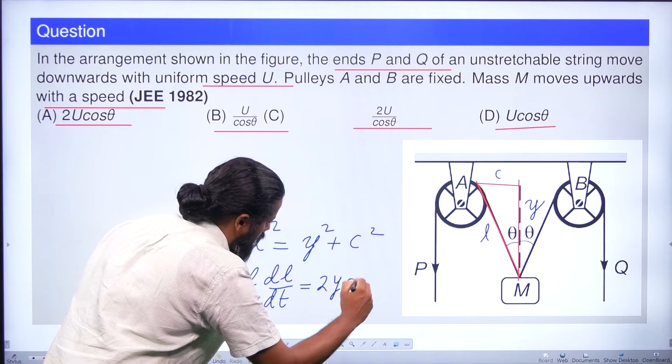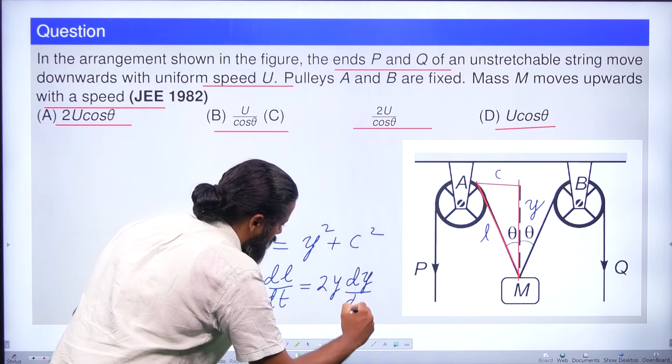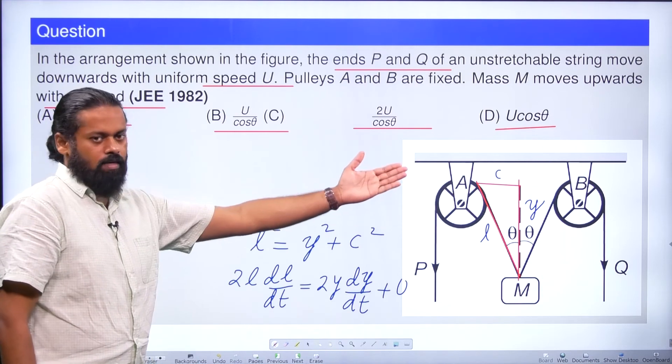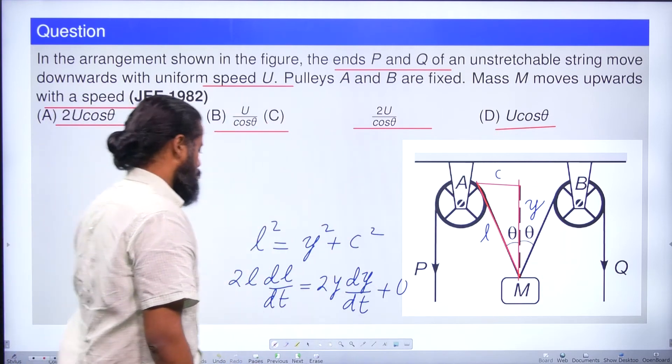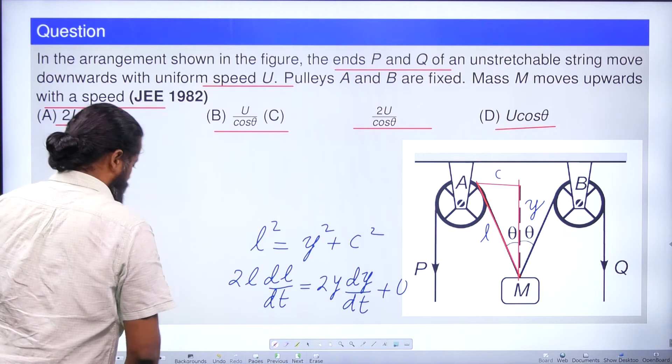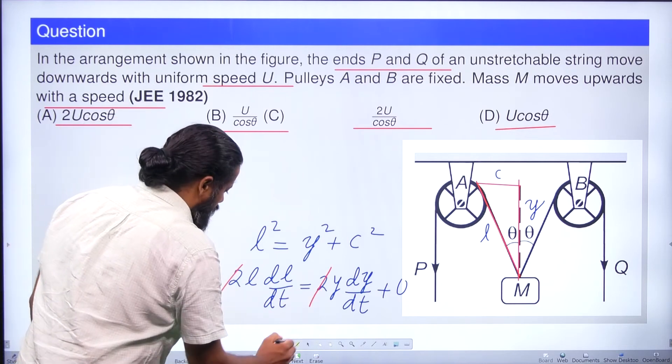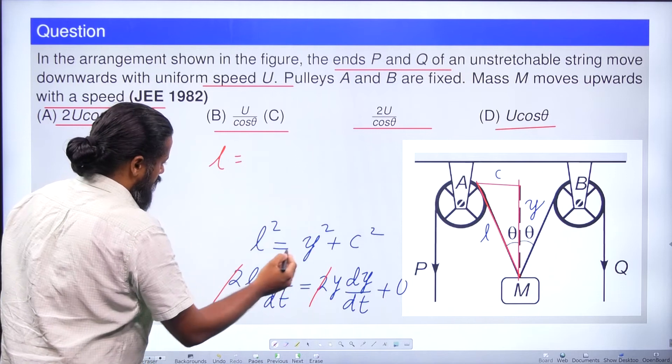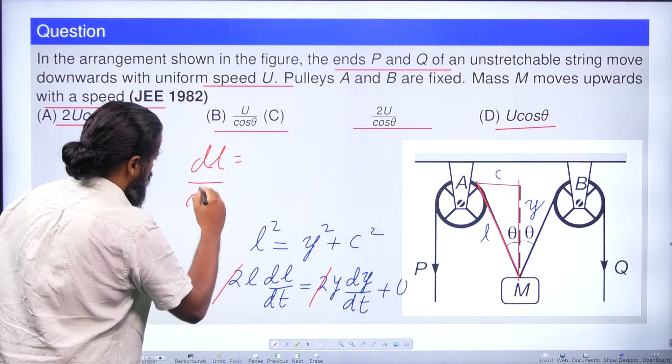This is equal to 2y × dy/dt + 0, because c is a constant. We already seen that c is not going to vary with respect to time. So here immediately we can cancel out this 2, and you will get a relationship: dl/dt = (y/l) × dy/dt.